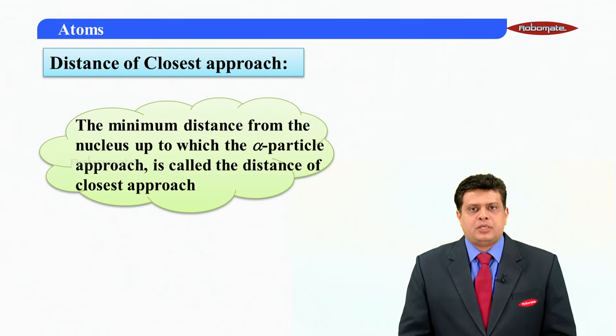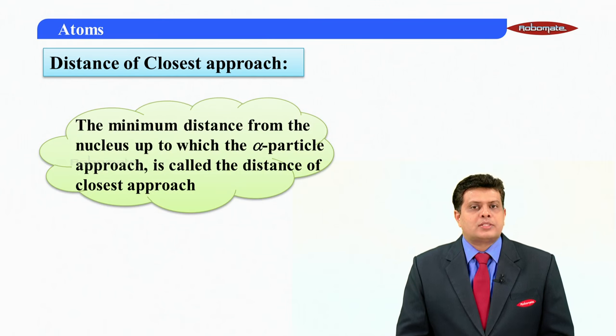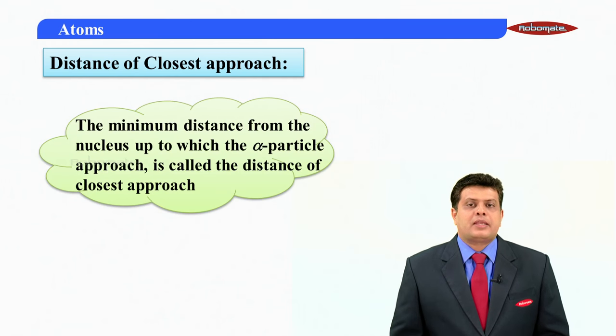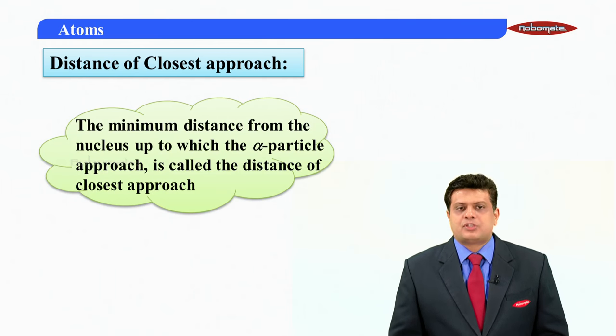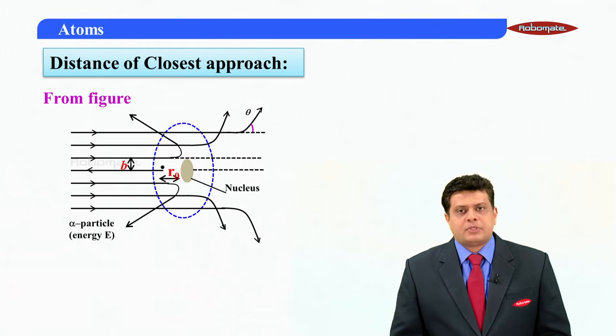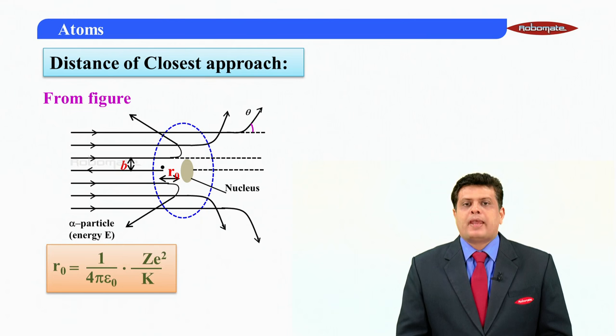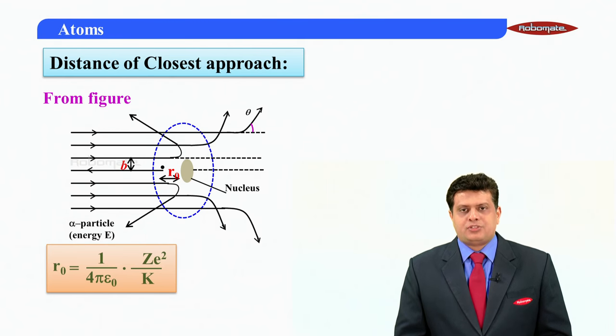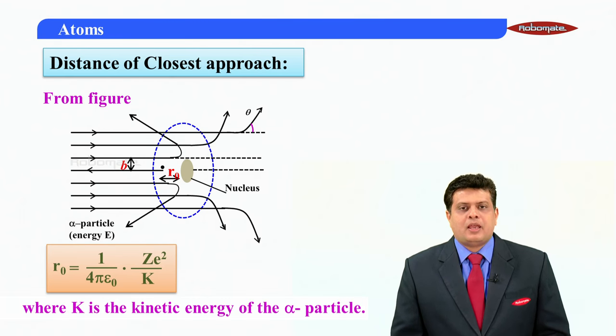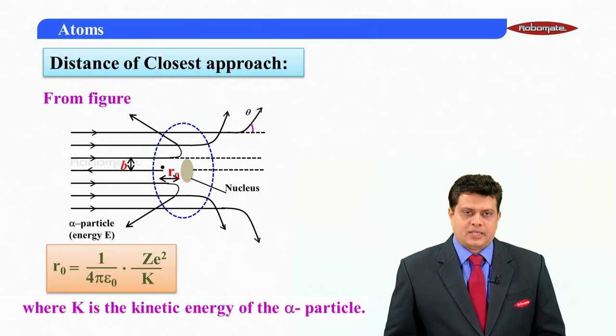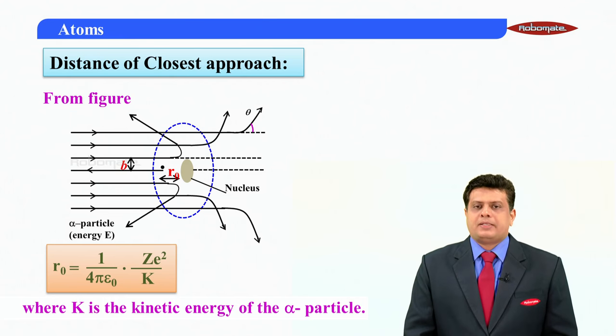Distance of closest approach. The minimum distance from the nucleus up to which the alpha particle can approach is called as distance of closest approach. We can see that from the diagram, R-not is acting like distance of closest approach. And its expression is given by 1 by 4 pi epsilon-not, Z-e-square divided by K, where K is the kinetic energy of alpha particle.